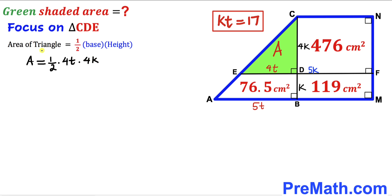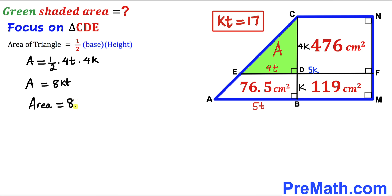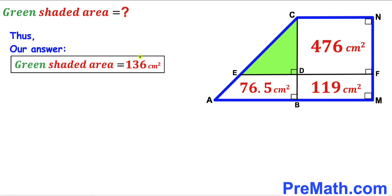Multiplying and simplifying the right-hand side, the area equals 8kt. Since we know kt = 17, substituting gives A = 8 × 17 = 136 cm². So the area of the green shaded triangle CDE is 136 centimeter square.